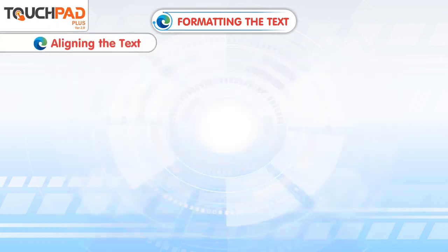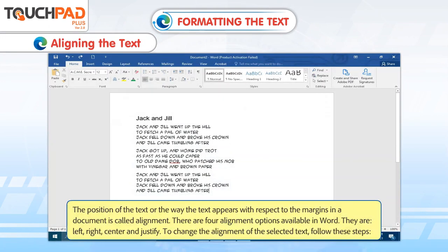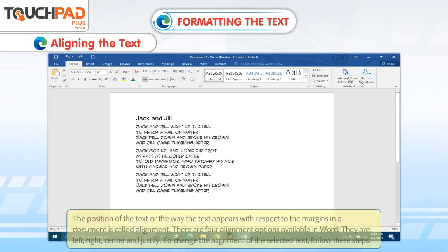Aligning the text. The position of the text, or the way the text appears with respect to the margins in a document, is called alignment. There are four alignment options available in Word. They are Left, Right, Center and Justify. To change the alignment of the selected text, follow these steps.